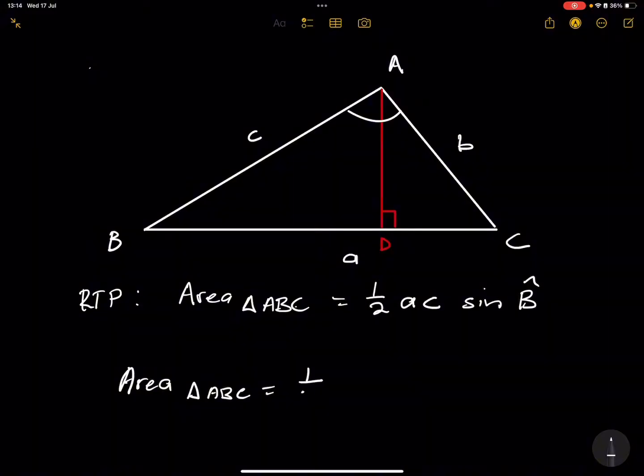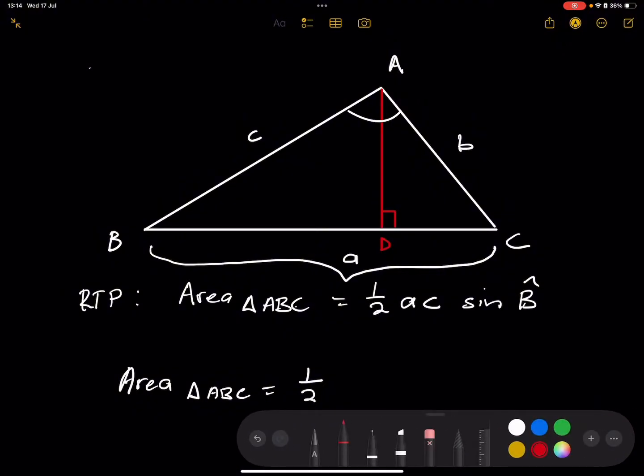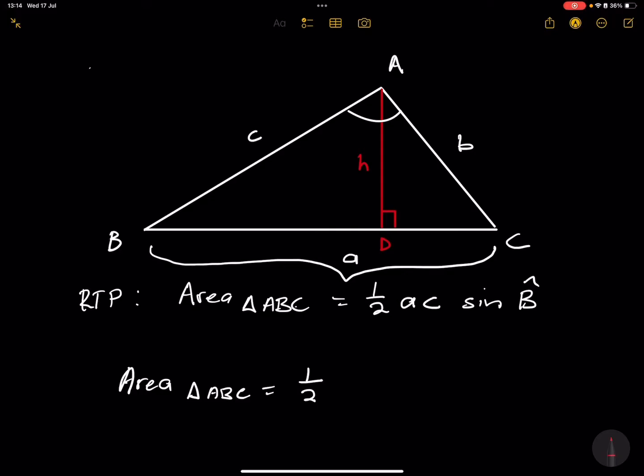So the area of any triangle, ABC in this case, is going to be half of the base multiplied by perpendicular height. Now what is our base? Our base will be side A and the perpendicular height, let's call that H.